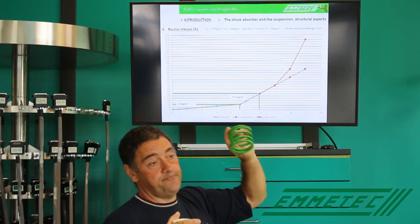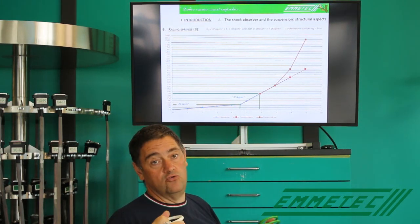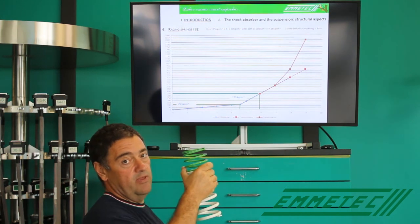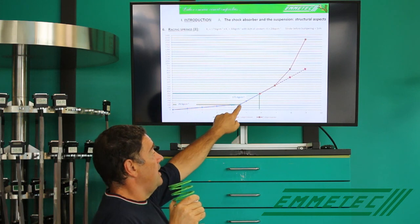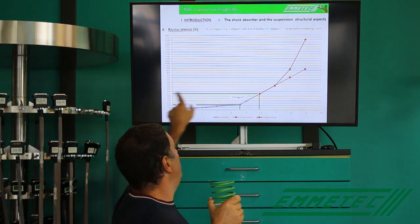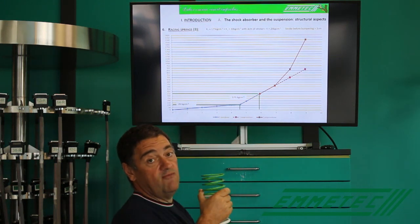This equivalent spring will work during 4.6 centimeters. Then the helper spring will be completely compressed and will no longer work. The stroke of the helper is 30 millimeters while the combined stroke to closure is 46 millimeters — because when the helper closes after 3 centimeters, the main spring has moved 1.6 centimeters, for a total of 4.6 centimeters. At that point, only the main spring works, and we move from 26 kilos per centimeter to 175 kilos per centimeter, continuing to the equilibrium point at 350 kilos.